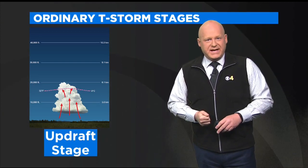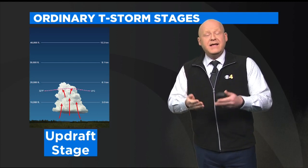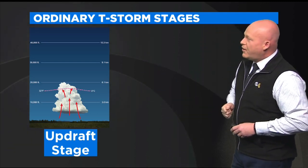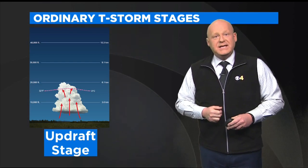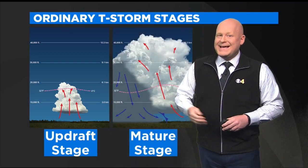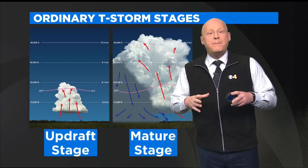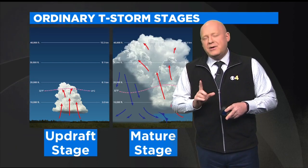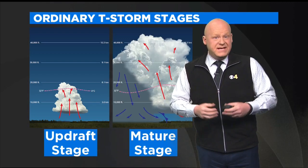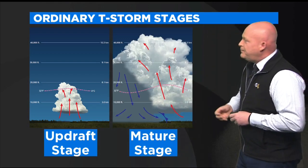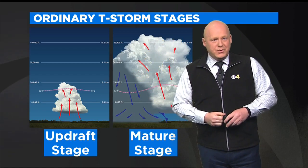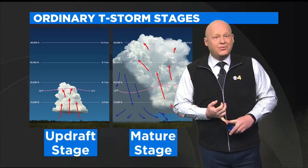We call this the updraft stage where air is simply rising. The higher that air gets as the day goes on, the taller your cloud will get. The bigger and the taller your cloud gets, what's happening inside are several processes that are building precipitation. And when that precipitation overcomes the updraft keeping it suspended, it will fall out of that cloud. And now we are in the mature stage, and this is when it will begin to rain.